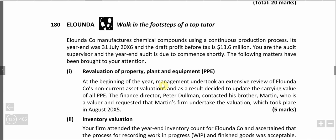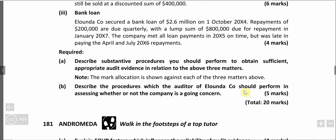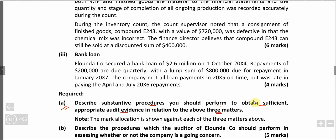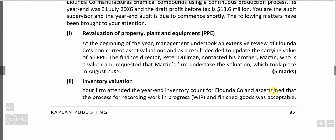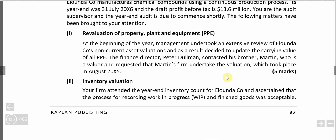In this lecture we are going to do question number 180, the name of the question is LUNDA. In the A requirement, we need to describe substantive procedures to obtain sufficient and appropriate audit evidence for three matters. For bank loan there are four marks, meaning four procedures; inventory valuation has six marks, six procedures; and revaluation of property, plant and equipment has five marks, five procedures.